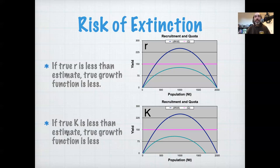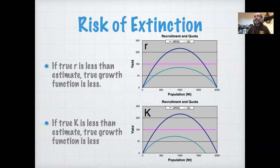Next let's think about K — carrying capacity. If the carrying capacity is actually lower than what we estimated, so we've overestimated K, that changes the intercept and also the height of the curve. Reducing K reduces the height of the growth curve as well. So again, reducing K can push this to a point of extinction. If we had set the quota at the maximum sustainable yield and there's uncertainty in K following a nice normal distribution, there's a 50-50 chance of driving the population to extinction.